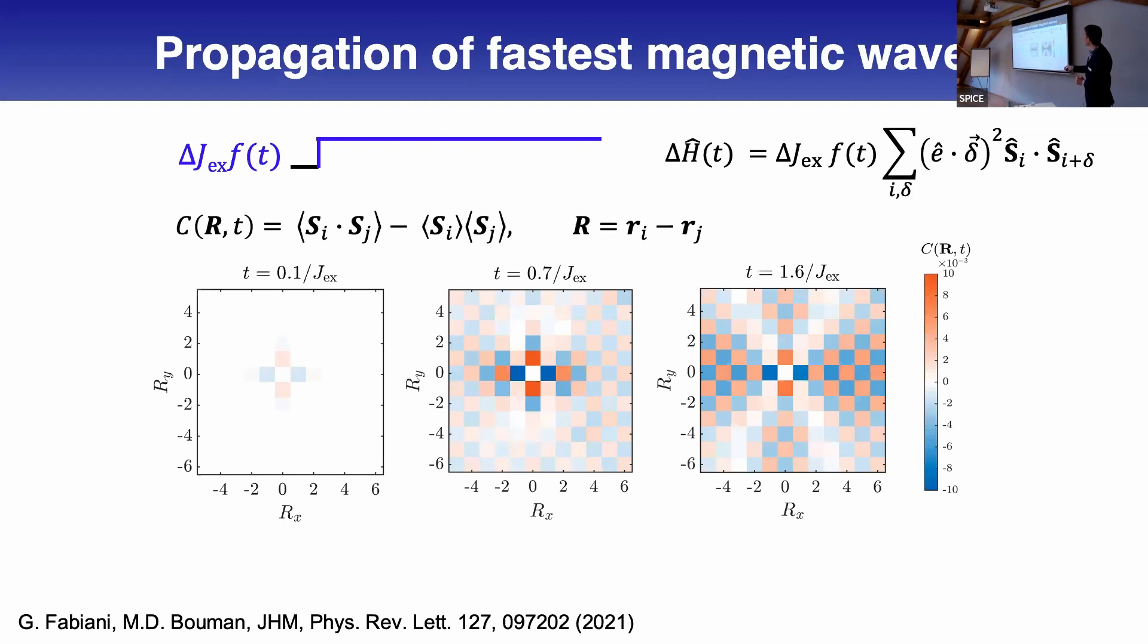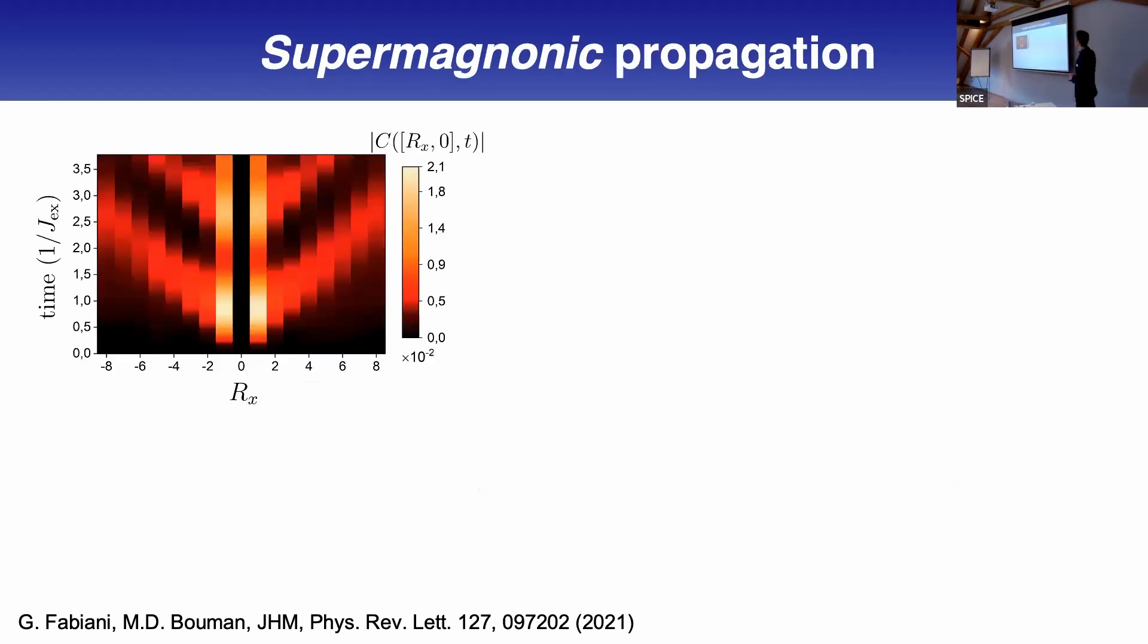Because everything is translation invariant, we only look at the relative distance. Here we have two dimensions—relative distance along y and x for a perturbation along y. You see this propagating wavefront, and there is some anisotropy which we can understand from the anisotropy of the light-matter interaction. We started to look at propagation along the x axis, showing time and space. The nearest neighbor correlations have the largest amplitude, but there is spreading to larger distances.